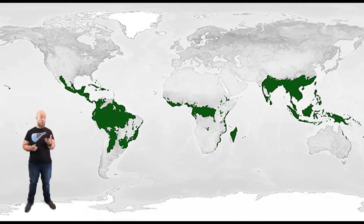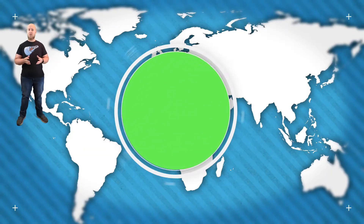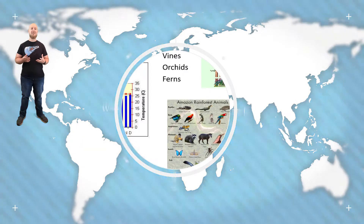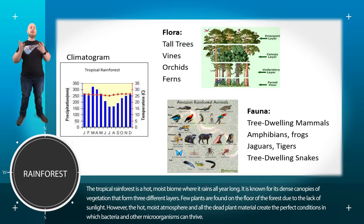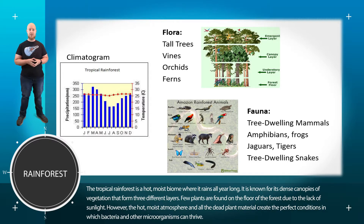The tropical rainforest is a warm and rainy biome situated right along the equator. In the tropical rainforest you are going to find that the dominant plant species are extremely tall trees, and those trees end up providing habitat to other plants — there are ferns, orchids, and vines that live on those trees.